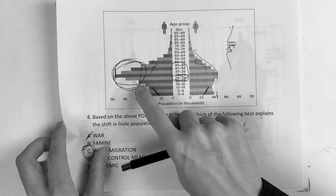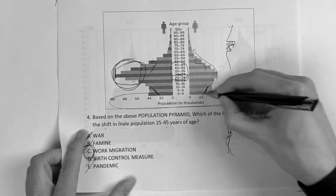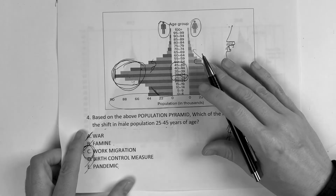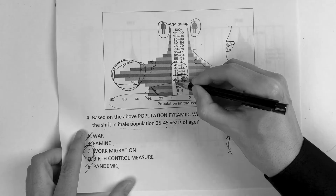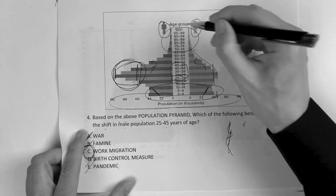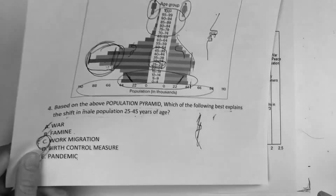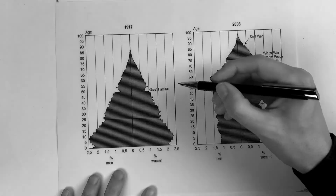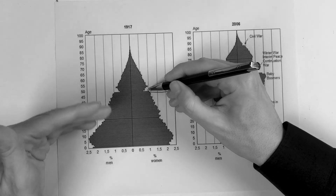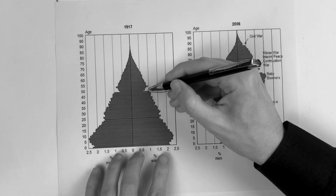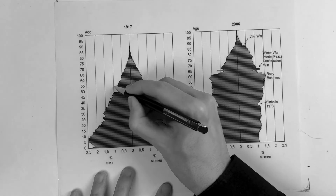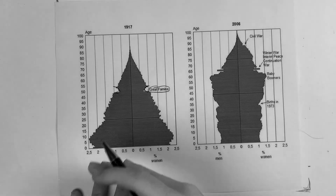You have to understand they can throw anomalies at you. If you know the basics — population at the bottom, females and males on each side — you can work through these. Be familiar with fertility rate, mortality rate to see if people are living or dying in subsequent generations, and life expectancy. Whenever you see an indention affecting a particular age group on both sides, think famine or war — some event that caused that generation to really struggle.